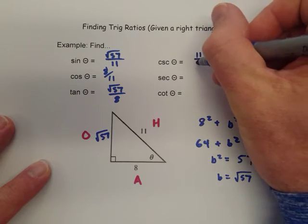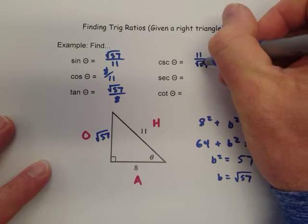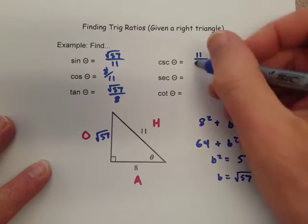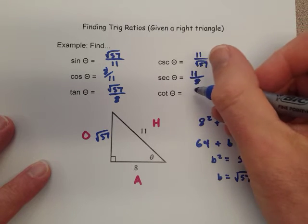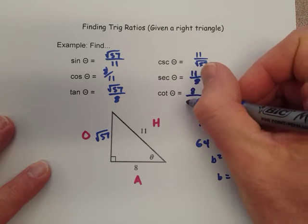So we take the reciprocal to get our cosecant, so that's 11 over square root of 57. And then secant is gonna be 11 over 8. And cotangent is 8 over square root of 57.